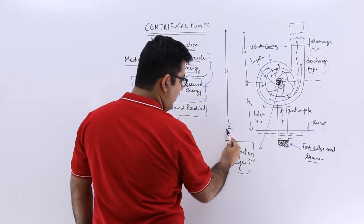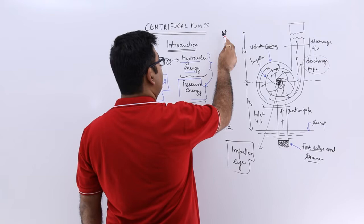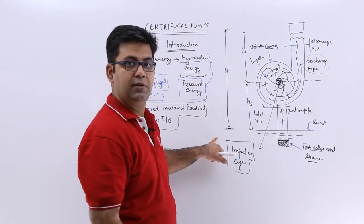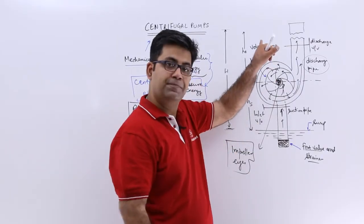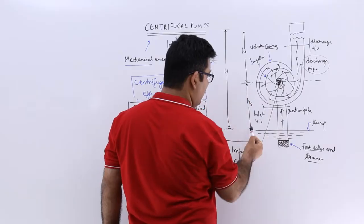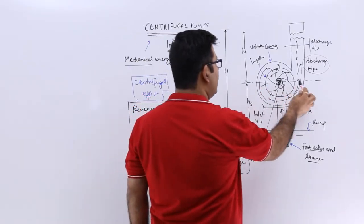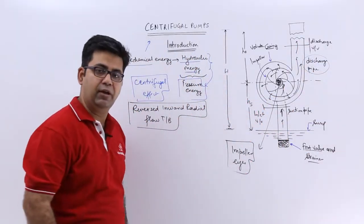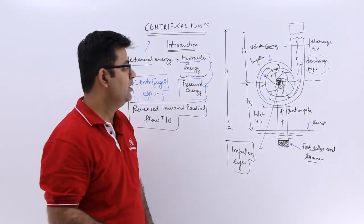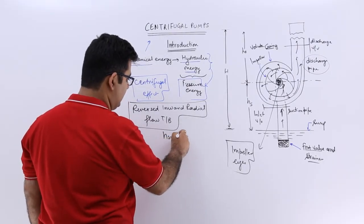Now if you look at this level, from this level to this level, this is the total head by which the liquid has to be raised. Till the center of the eye, this is the suction head and from the center of the eye to the point of the delivery, the highest point of the delivery, you have the discharge head.